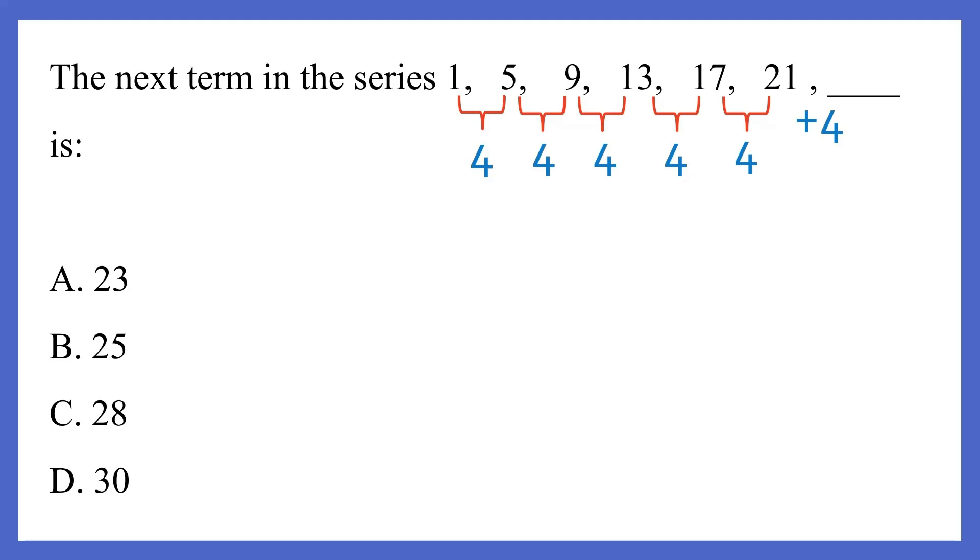13 plus 4 gives you 17. 17 plus 4 gives you 21. So to calculate the next term in the series, all you have to do is add 4 to 21. So 21 plus 4 gives you 25. So your answer is option B, 25.